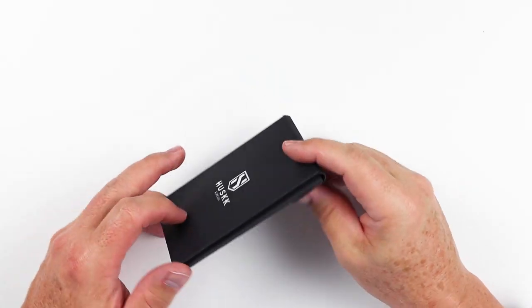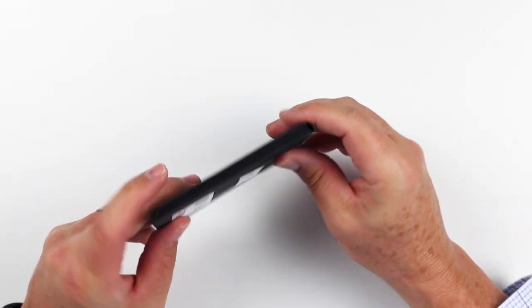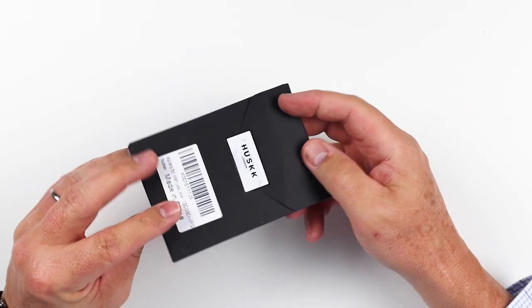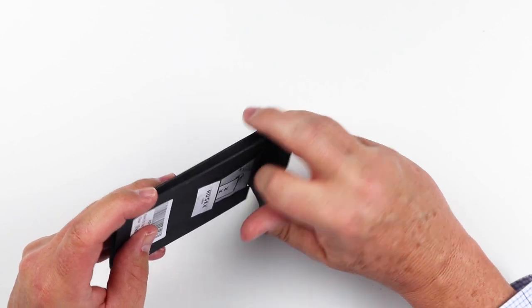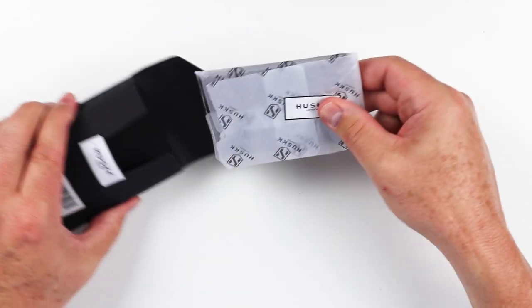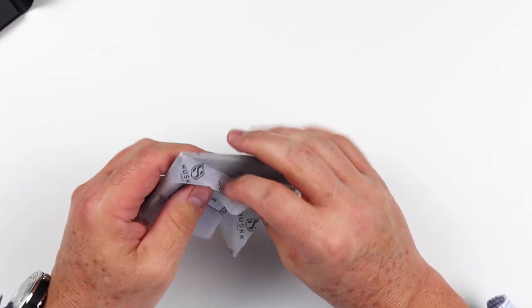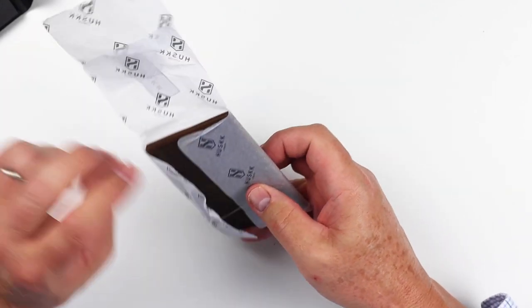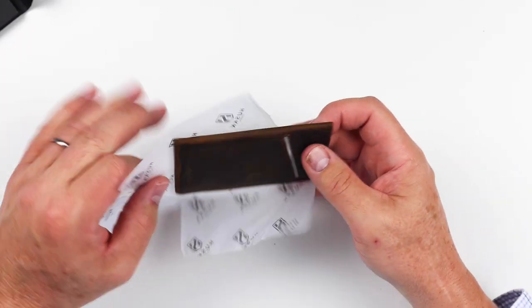This is the Husk Slim model, and it is designed in the UK. Anyway, let's get into it. It comes in this nice little envelope. We pull this open here in the back. Pull this out of here. Tissue paper, and we open it up.